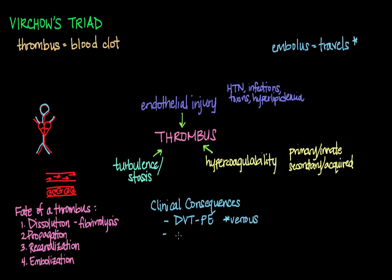For arterial thrombi, we worry about occlusion of important arteries such as the coronary arteries that perfuse the heart and cerebral arteries that perfuse the brain. Occlusion of these arteries can lead to a heart attack and a stroke, respectively — an MI, or myocardial infarction, and stroke are the most key clinical consequences for arterial thrombi.